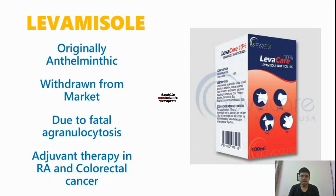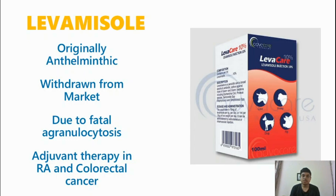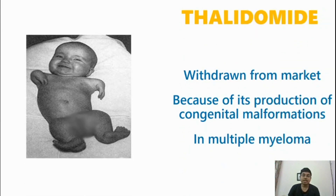Levamisole was synthesized as an anthelmintic, but later found to restore immune functions by activating B-lymphocytes, T-lymphocytes and monocytes. However, it is now withdrawn from the market because of its risk for fatal agranulocytosis. Its only indication was as adjuvant therapy in rheumatoid arthritis and colorectal cancer. Thalidomide was synthesized in Germany from glutamic acid. It was withdrawn from the market because of its production of congenital malformations. There was a worldwide tragedy in the late 1950s because of this, and it was used in multiple myeloma.